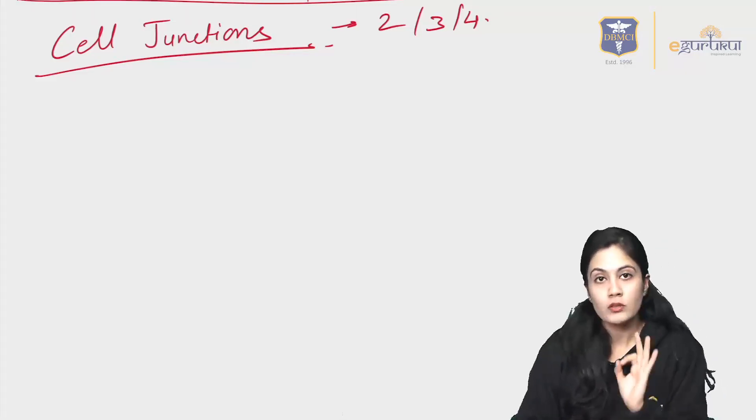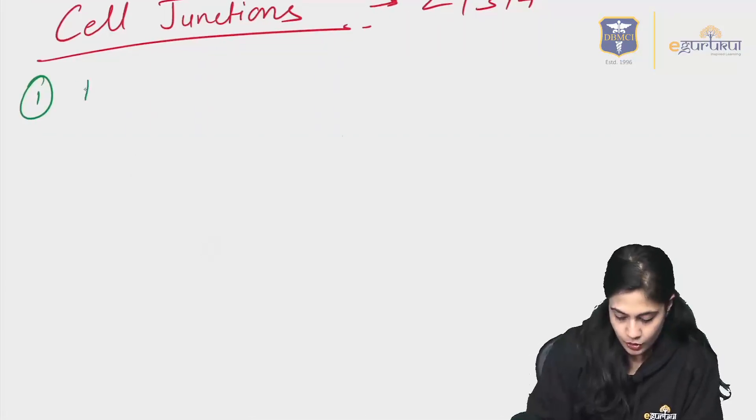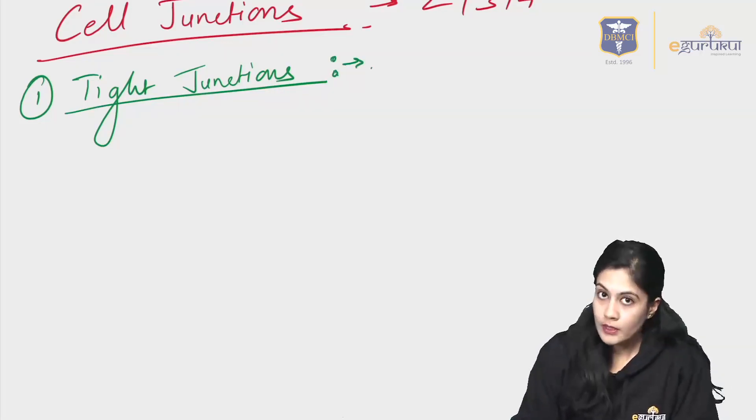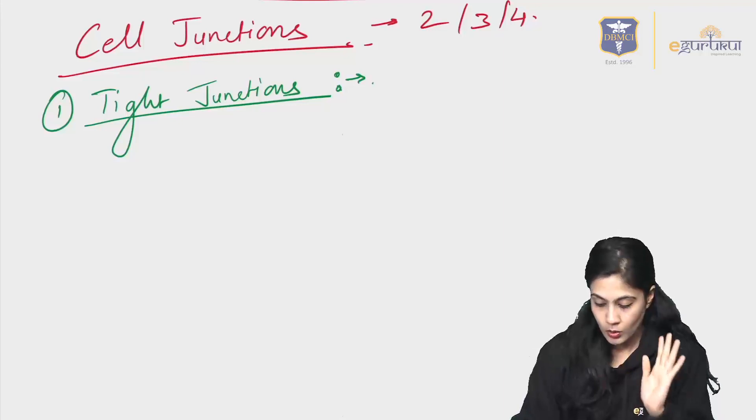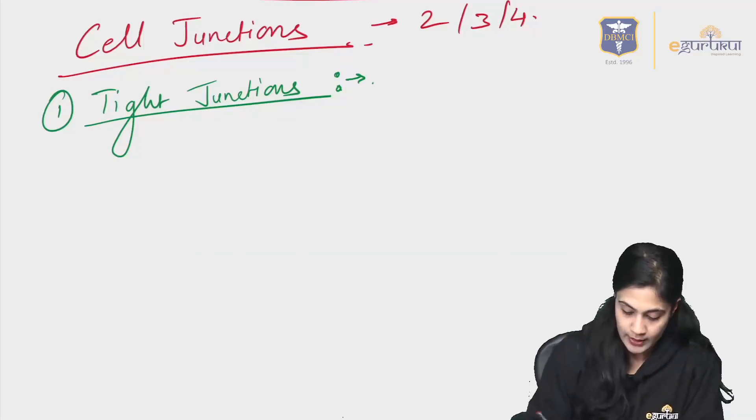There are typically major 3 types of junction. First one is the tight junctions. Even if you do all these questions, remember these are going to not only prepare you for the viva and your theory, but it is also preparing you for your entrance exam in the PG. For now, you should be knowing what is important for the short notes as well as long questions. So tight junction.